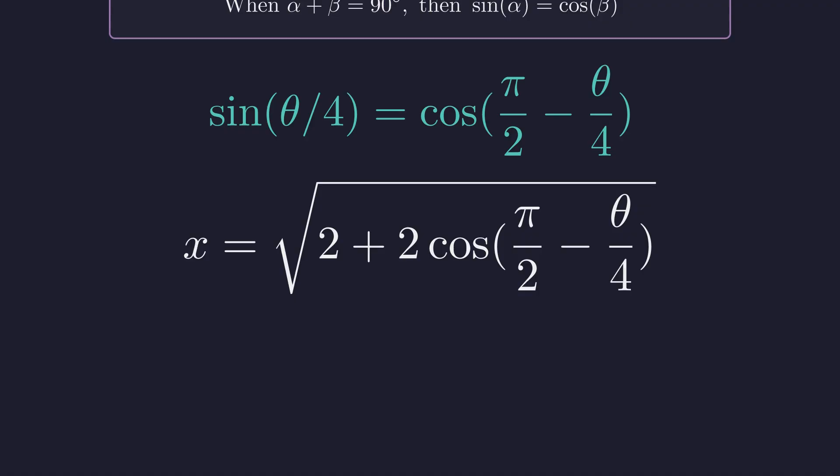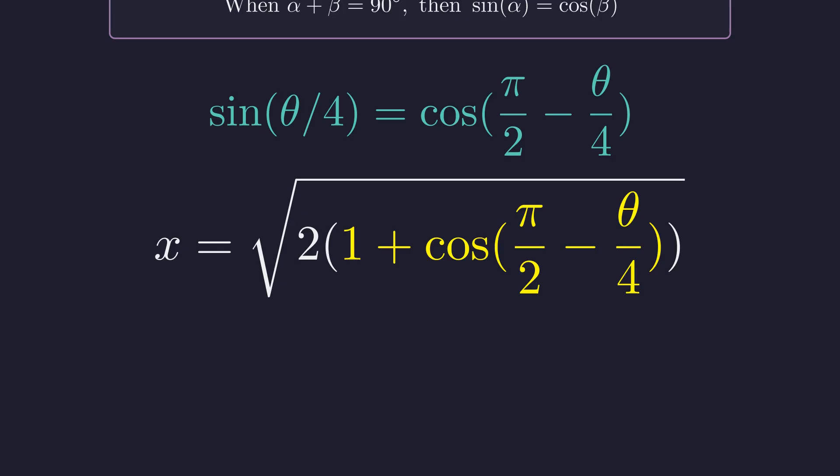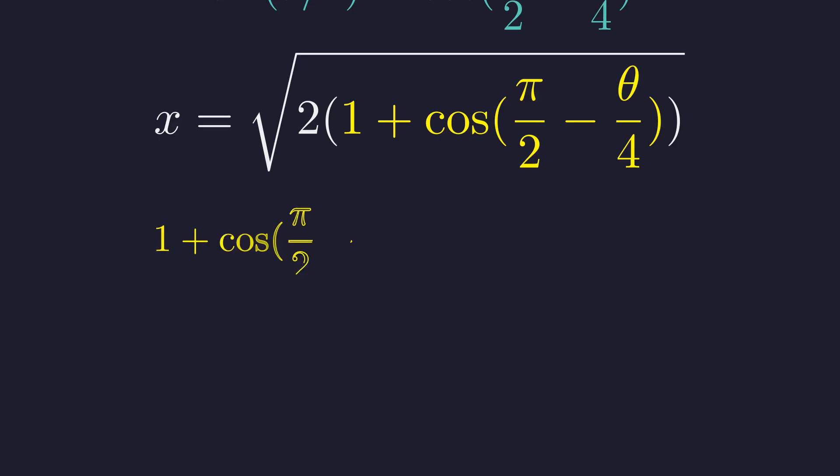For our final simplification, we again factor out the 2. We recognize this pattern again: 1 plus cosine of an angle. Using the half-angle identity again, 1 plus cosine of π over 2 minus θ over 4 equals 2 cosine squared of half that angle, which is π over 4 minus θ over 8.